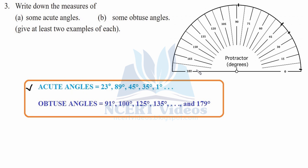Now, obtuse angles are angles greater than 90 and less than 180 degrees. All angles which fall in that range qualify. For example: 91, 100, 125, 135, and so on up to 179, because 179 is the last obtuse angle. 180 is a straight angle, and 90 is a right angle — it is not an acute angle. This is how you differentiate between angles.